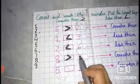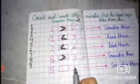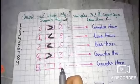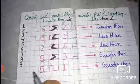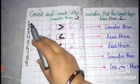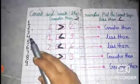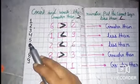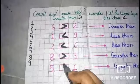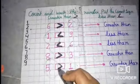Next, we have two numbers: five and one. Let's count — one is the smaller number. Two, three, four, five — five is more than one. So the sign is greater than.